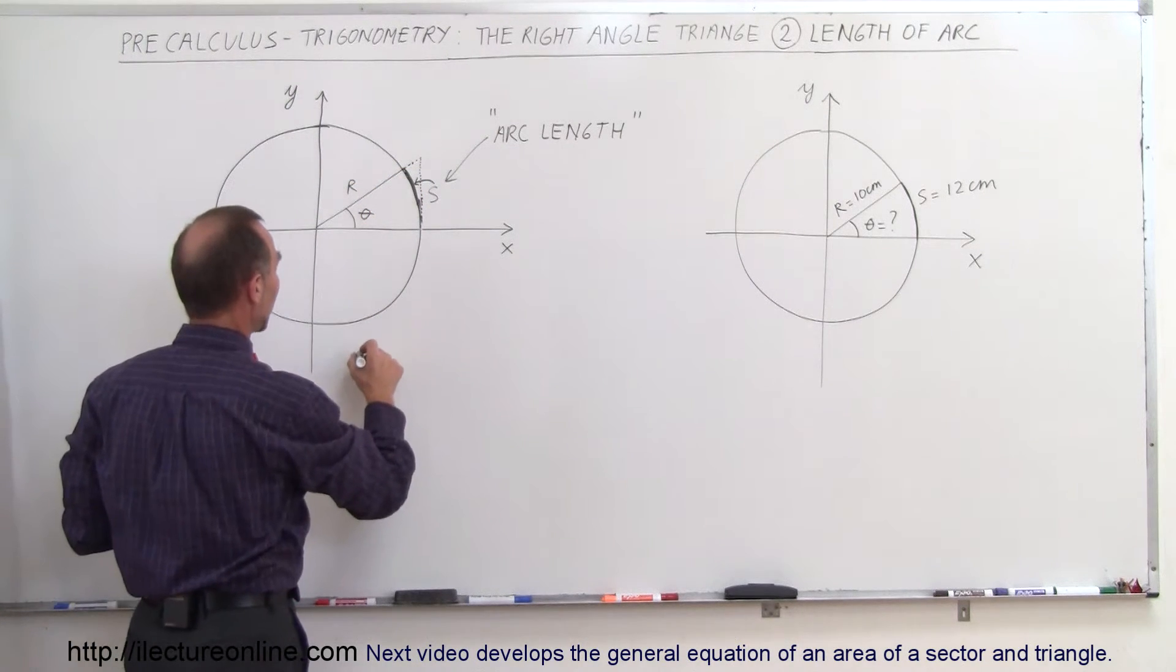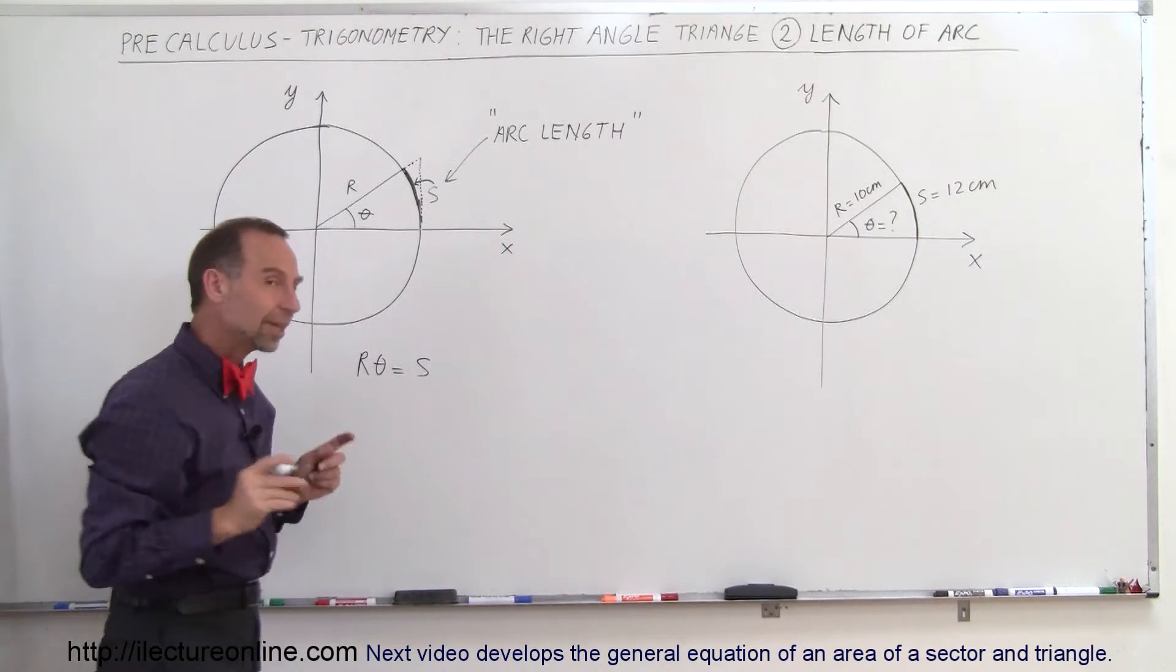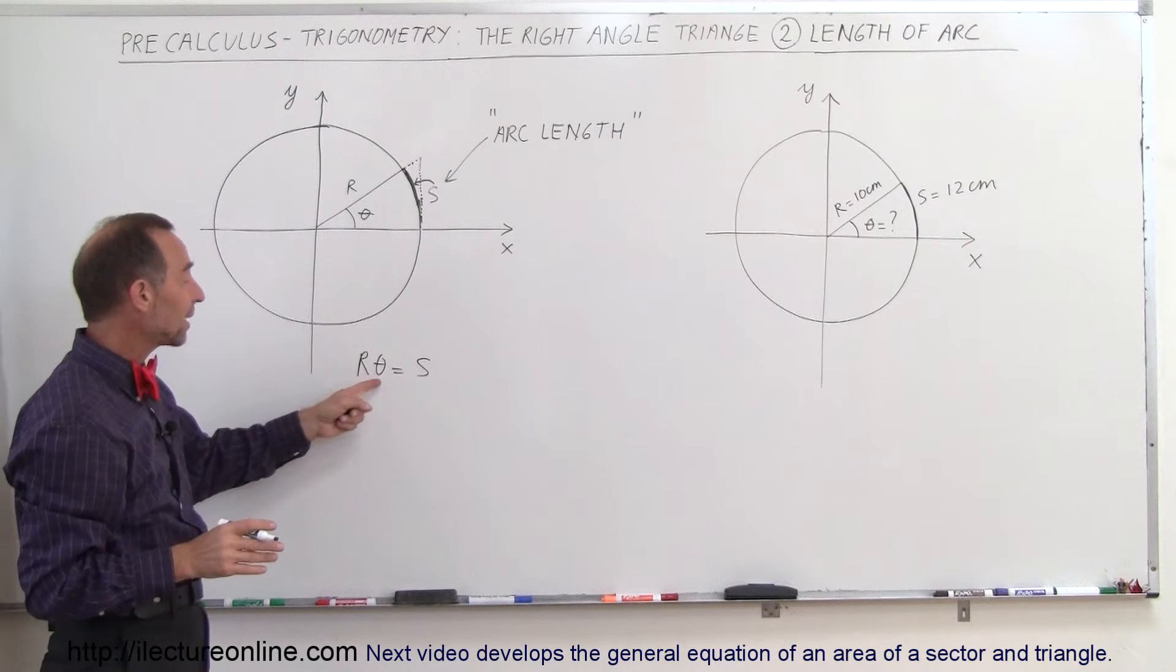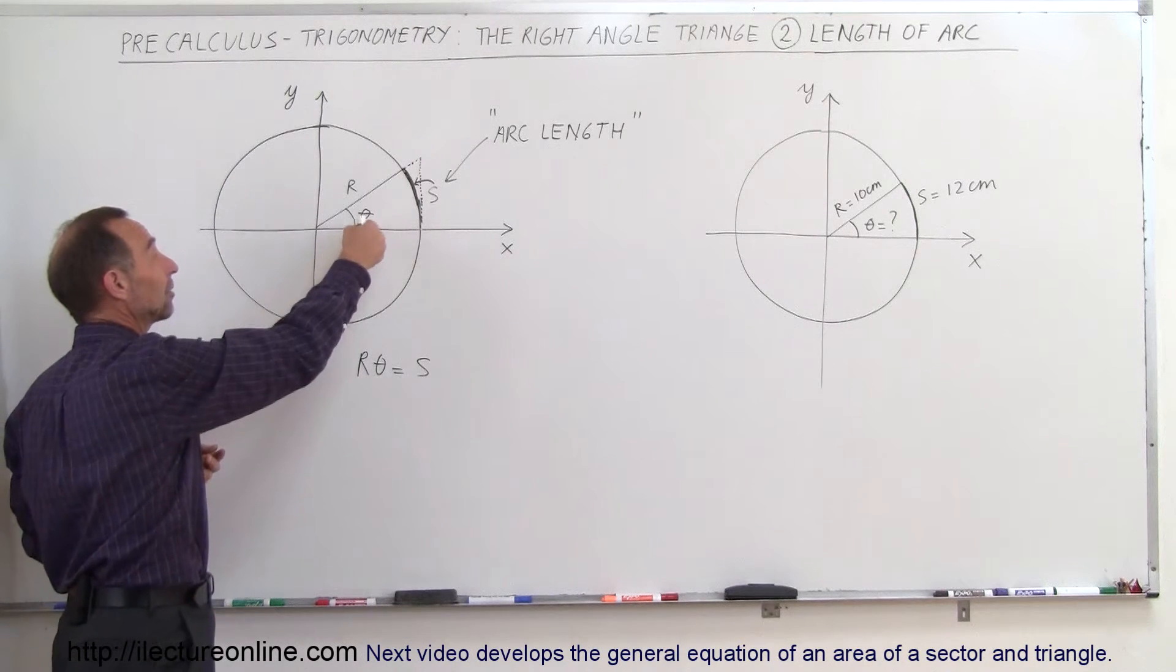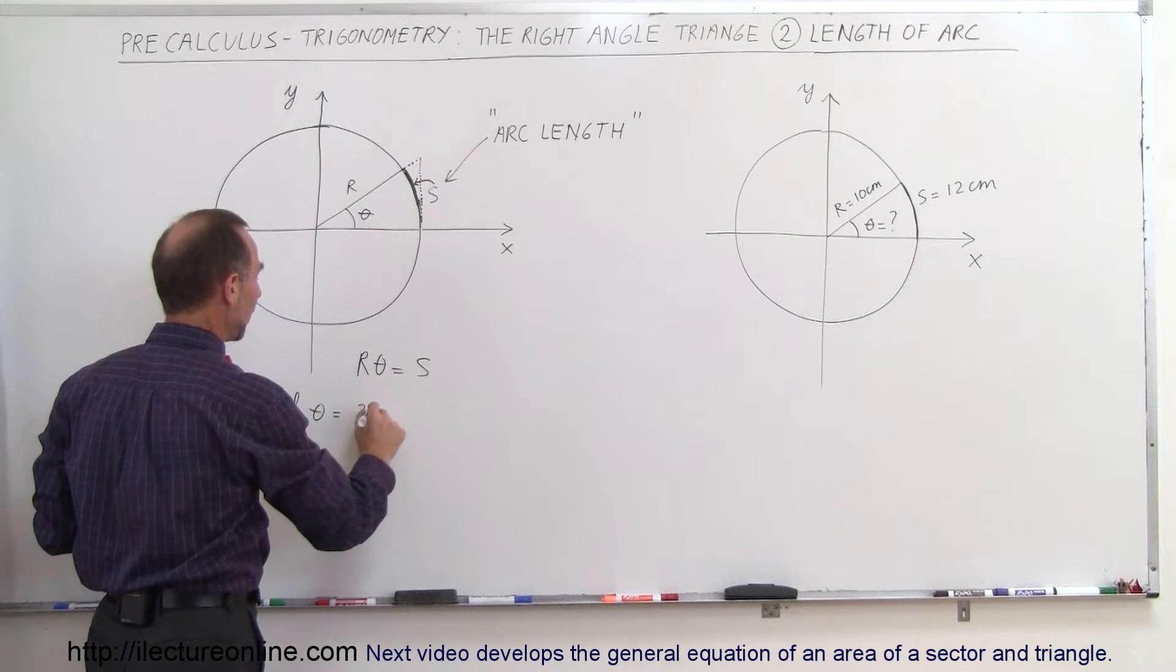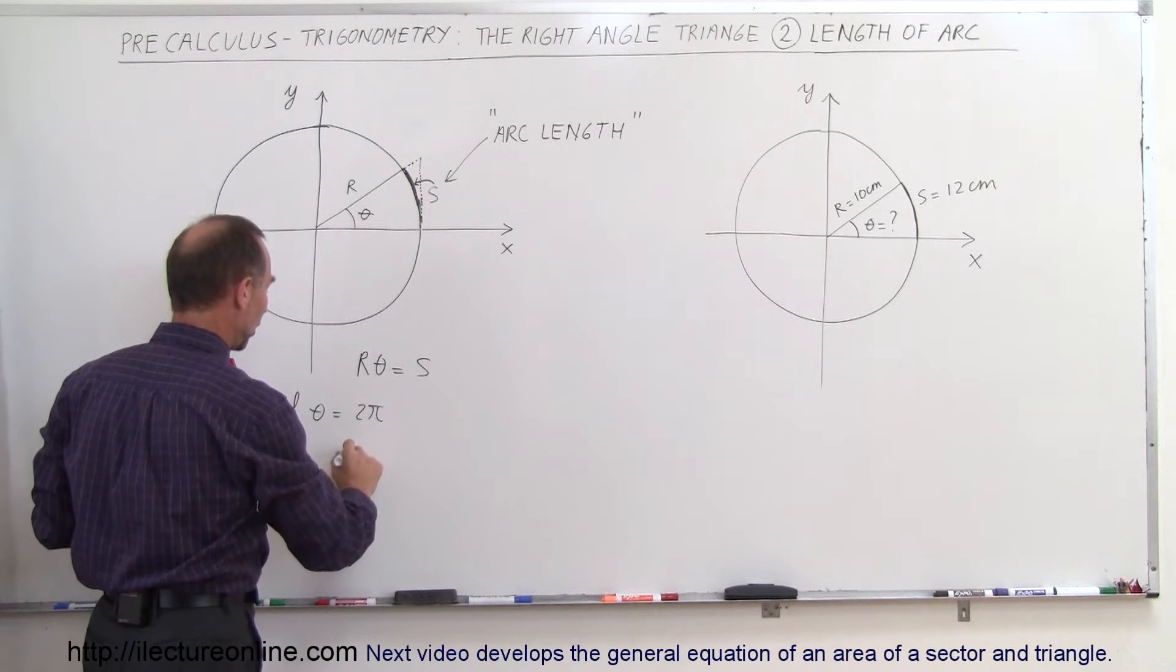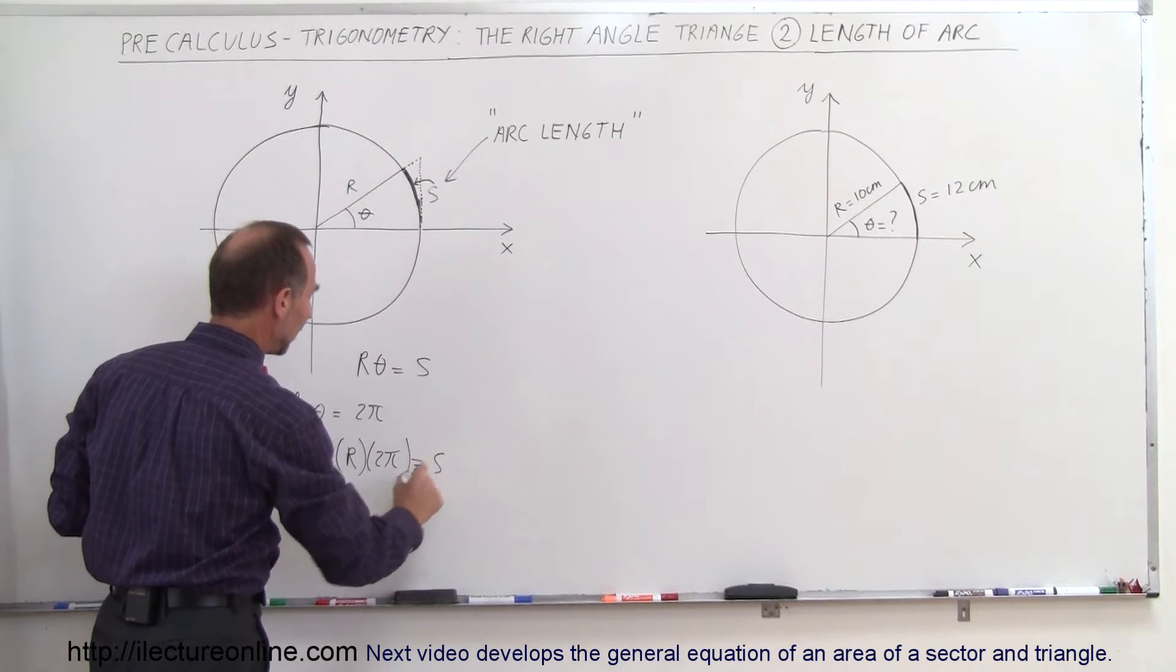And the relationship is that R times theta equals the arc length S. That's kind of interesting because what happens when the angle theta is equal to, for example, 2π? Remember 2π, that's a full circle. So if theta equals 2π, then we get R times 2π equals S.